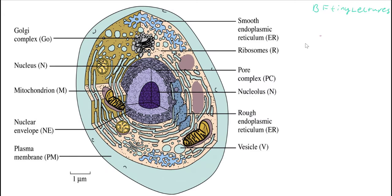For our next part of the lecture, we're going to be focusing on eukaryotic cells. A eukaryotic cell is a cell that has a lot of organelles — little tiny factories, as I like to call them — in the cell. For instance, it has a Golgi complex, the nucleus, the mitochondrion, etc.